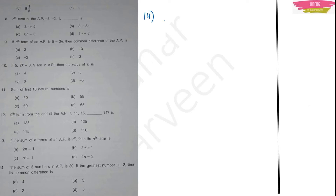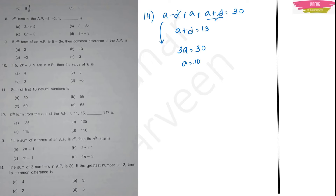Question 14: The sum of 3 numbers in AP is 30 and the greatest number is 13. Write the three terms as a−d, a, a+d. Their sum gives 3a = 30, so a = 10. The greatest term is a+d = 13, so d = 13−10 = 3. Option B is the right answer.